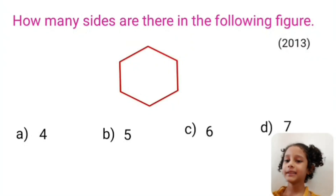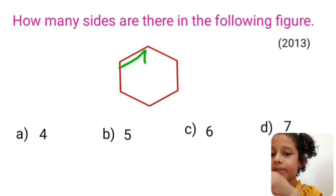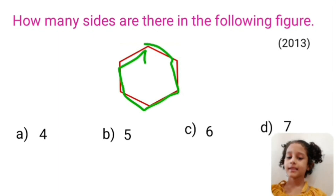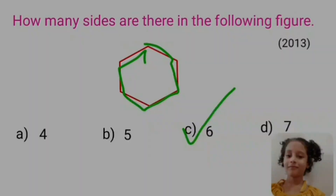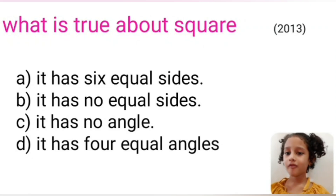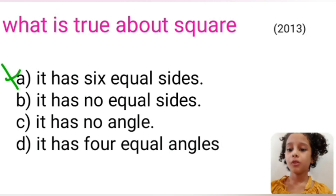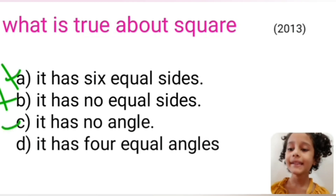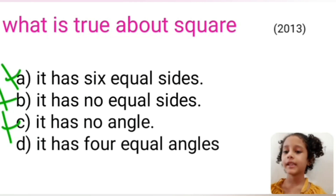How many sides are there in the given figure? Let's count sides: 1, 2, 3, 4, 5, 6 — six sides. The name of this shape is a hexagon. What is true about a square? It has four equal sides and four equal angles.